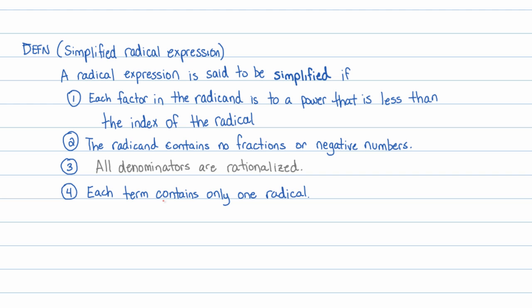Each factor in the radicand is to a power that's less than the index of the radical. In other words, a good simplification is if you had something like, oh, I don't know, the fourth root of 3x to the third. Notice the power on this is less than the index on the radicand. A bad simplification would be like the fourth root of 3x to the seventh. Notice this power here is much greater than the power on the index, or the number of the index. So this tells me that this can be simplified further. We'll talk a little bit about that when we get into the next lecture.